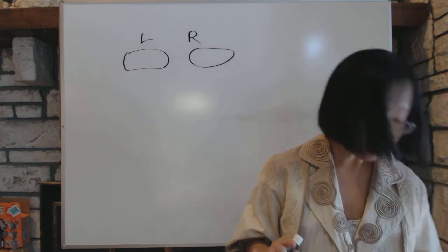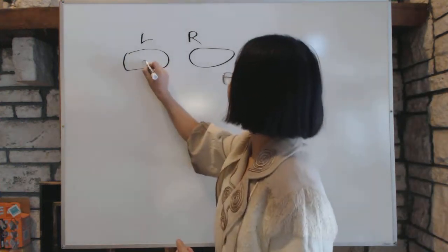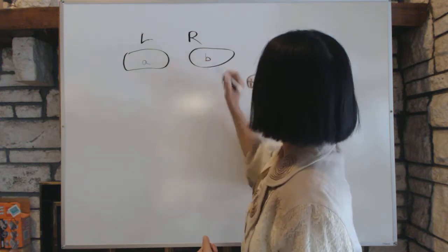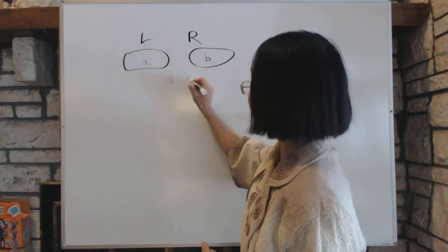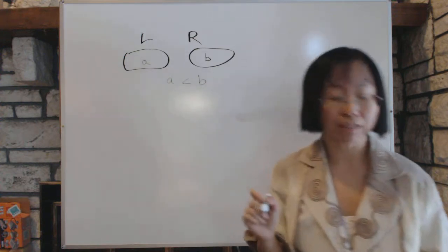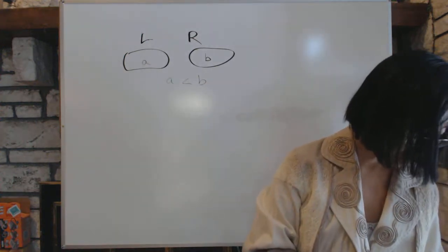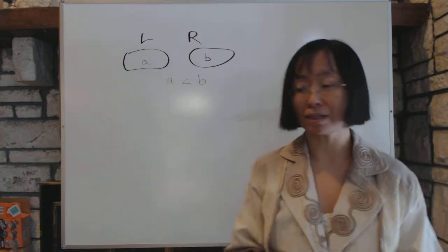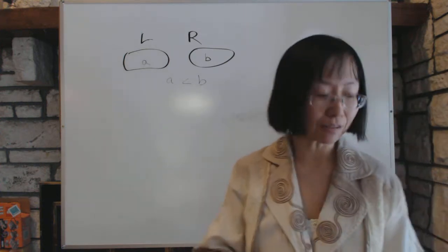And then if A is in L and B is in R, then A is less than B. That means everything in the left is going to be less than everything in the right. Now, suppose we divide the real number that way. In real life, we know that we can do so.